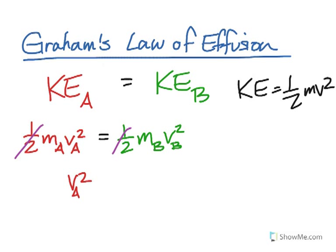So VA squared divided by VB squared equals MB divided by MA.